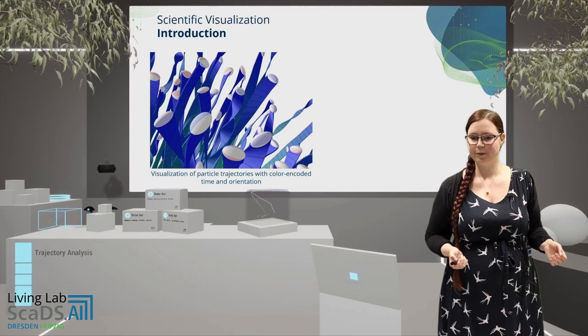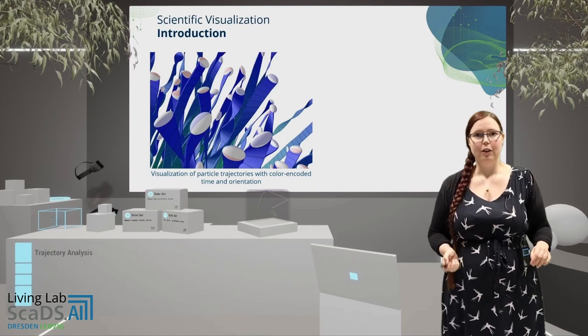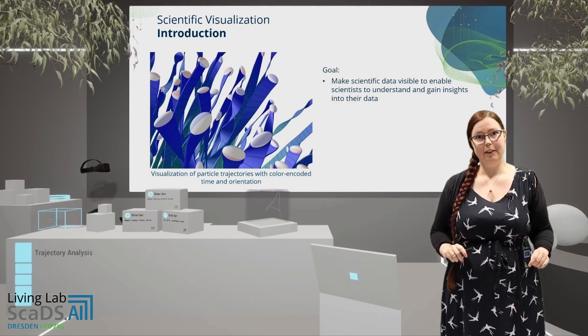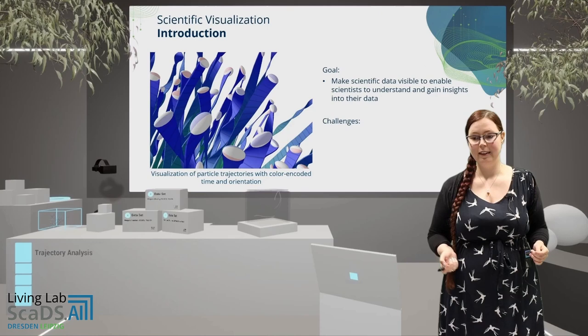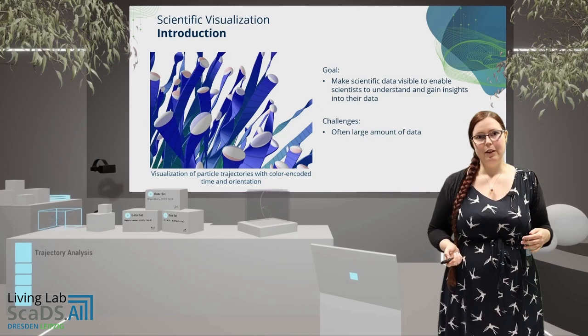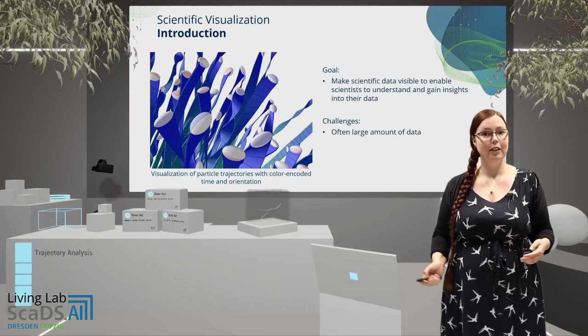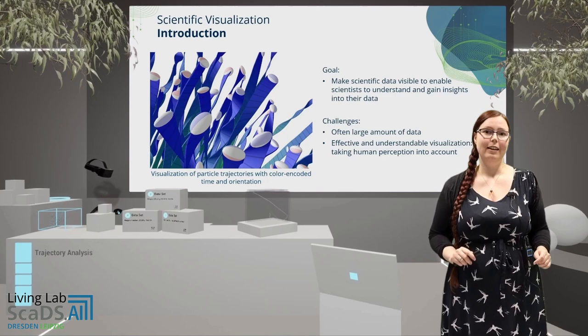Let's start with scientific visualization. Here you can see an example visualization where color and shape encode attributes of a particle trajectory. The goal of scientific visualization is to make scientific data visible, enabling scientists to understand and gain insight into their data. There are several challenges present — oftentimes we have to deal with a large amount of data, and therefore we require some data reduction techniques, filtering, and so on.